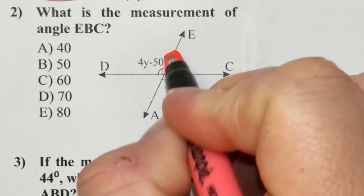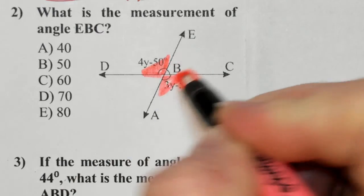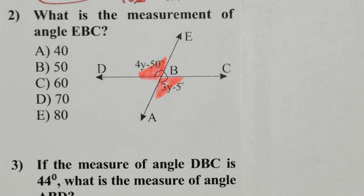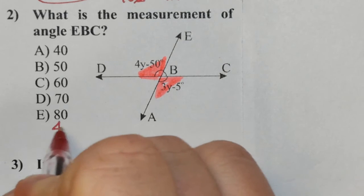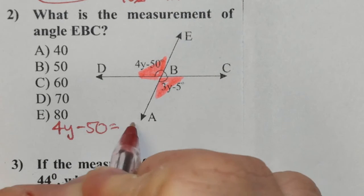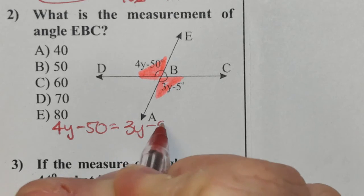So vertical angles makes this angle equivalent to this angle. That means I'm able to take 4y subtract 50 and set it equal to 3y subtract 5.